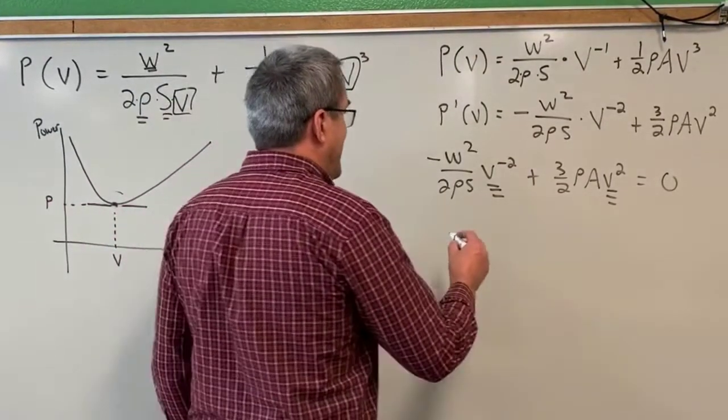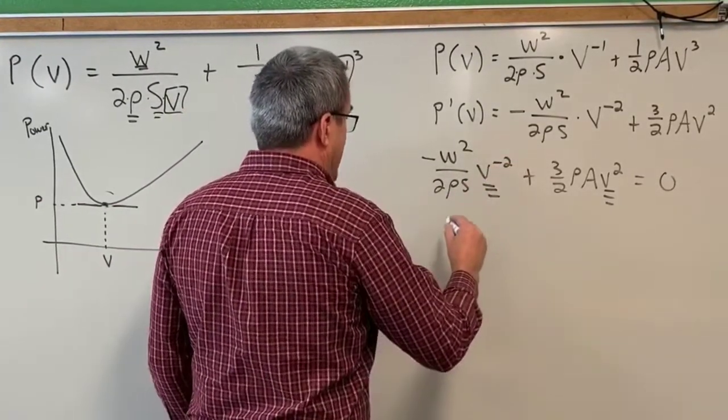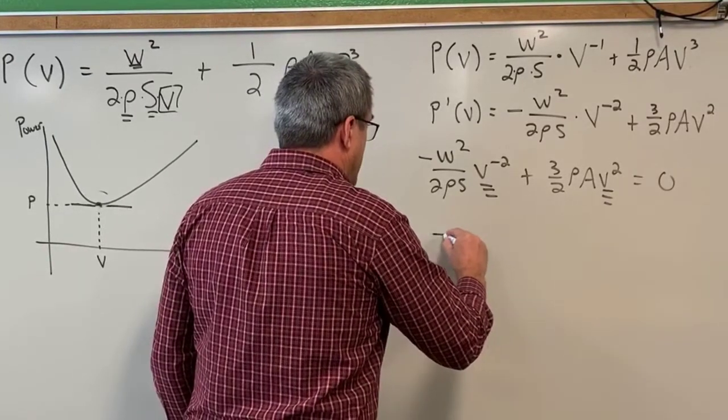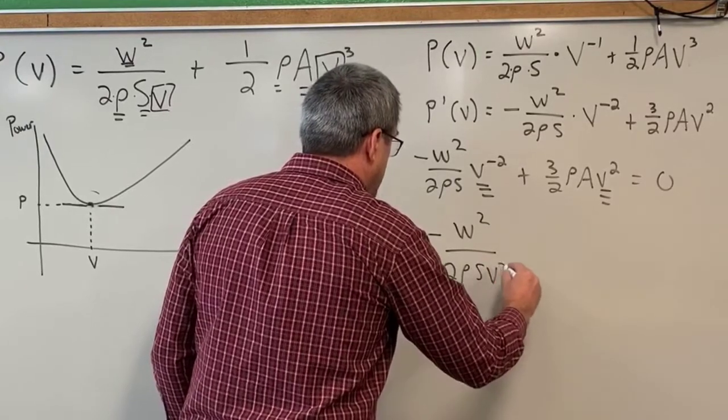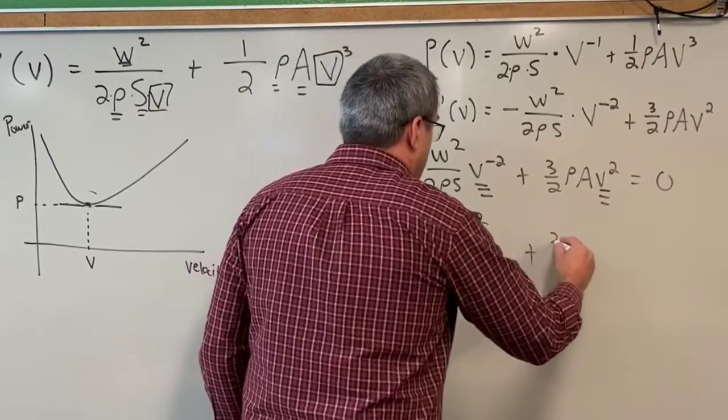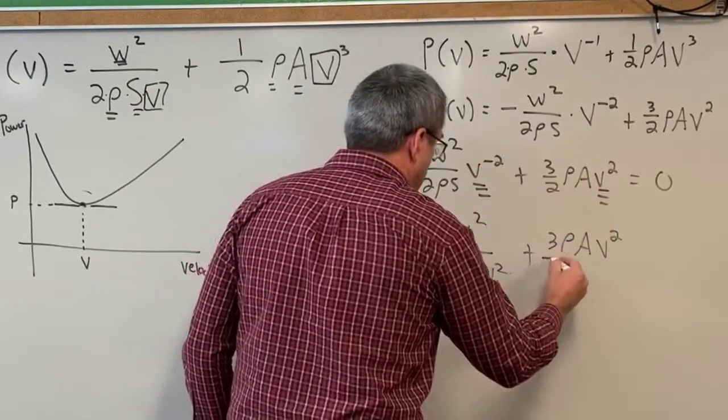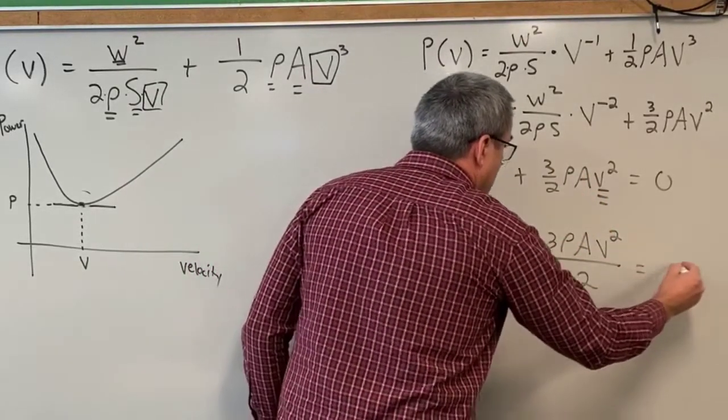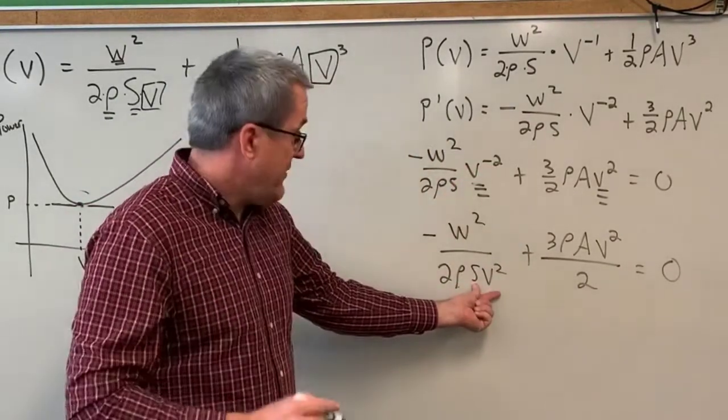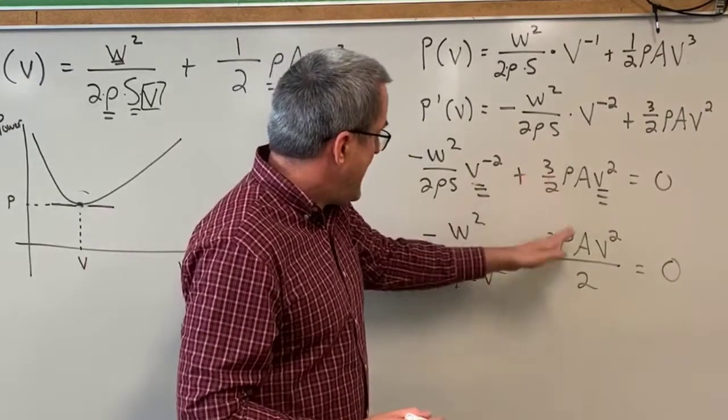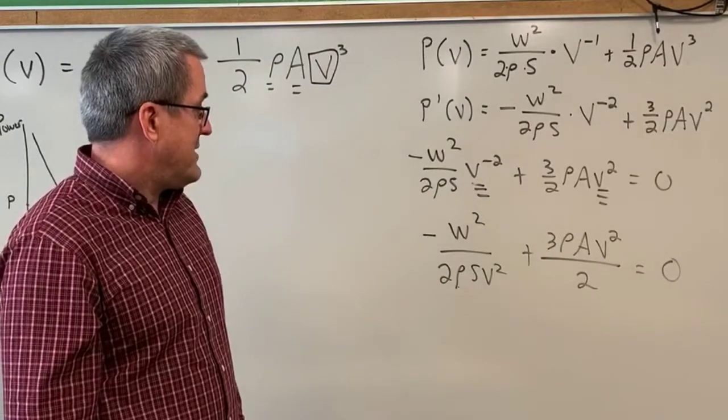First of all, let's do this. Now that we have this V to the negative 2, I'm going to rewrite it with positive exponents again. So we have negative W squared over 2 rho S V squared. And we have 3 rho A V squared. And rather than having 3 halves, I'm just going to say all over 2. So algebraically speaking, this V to the negative 2 becoming a denominator of V squared, or this 3 halves becoming 3 halves like this. Algebraically, we have an equivalent expression.